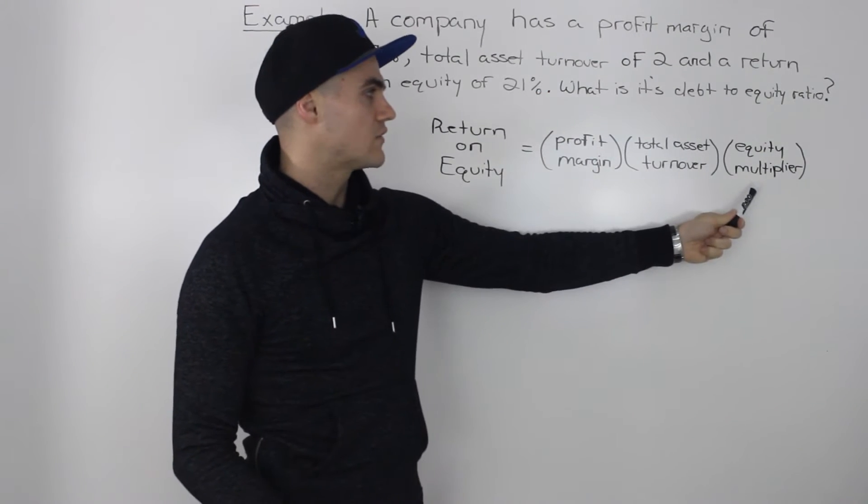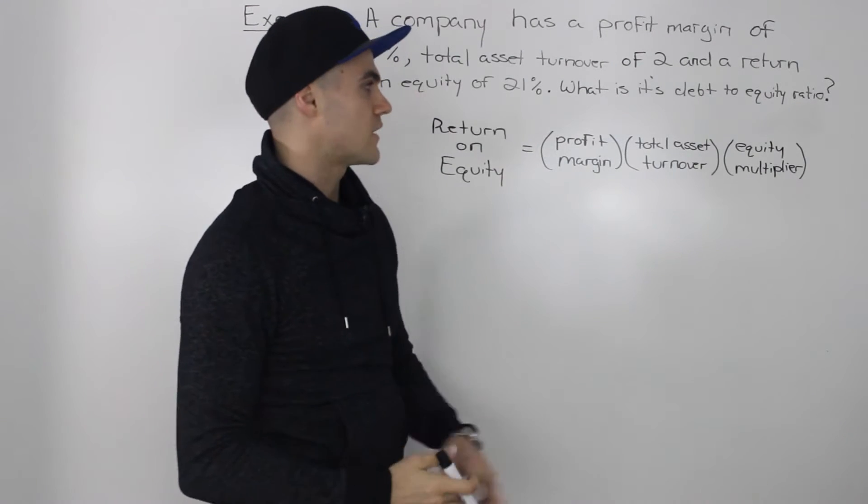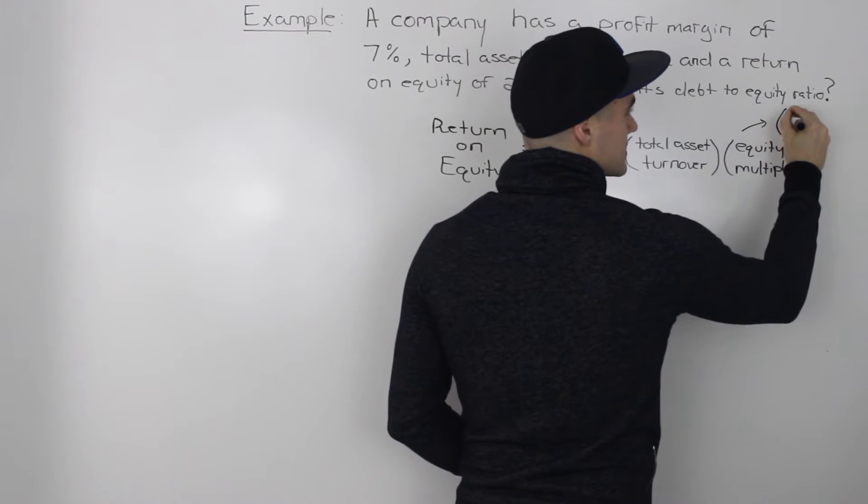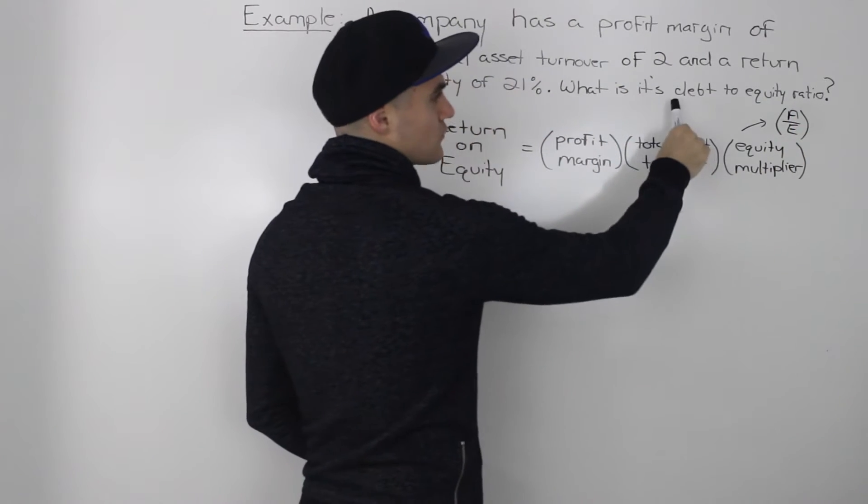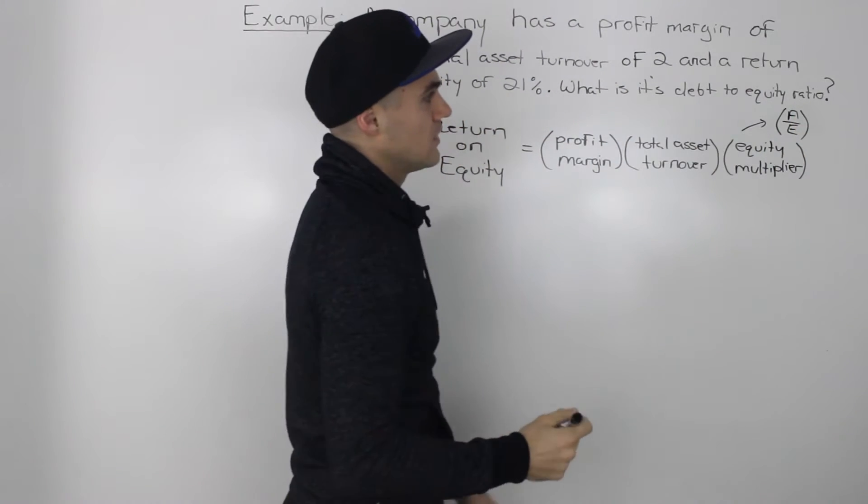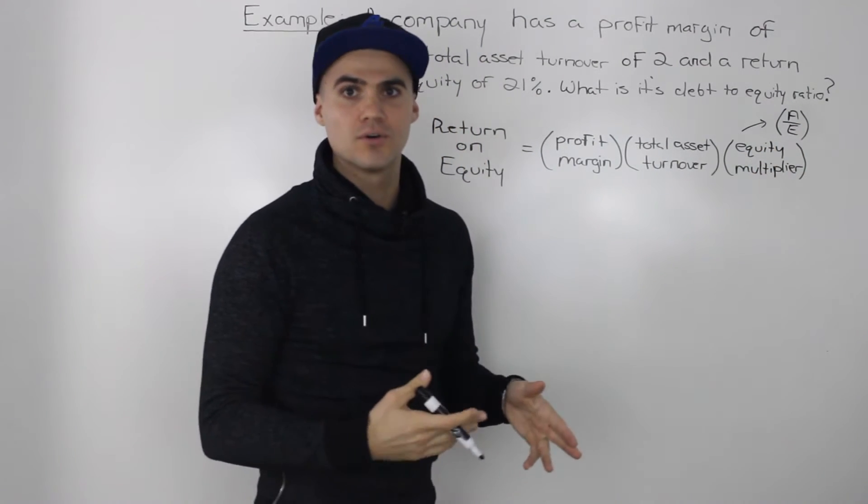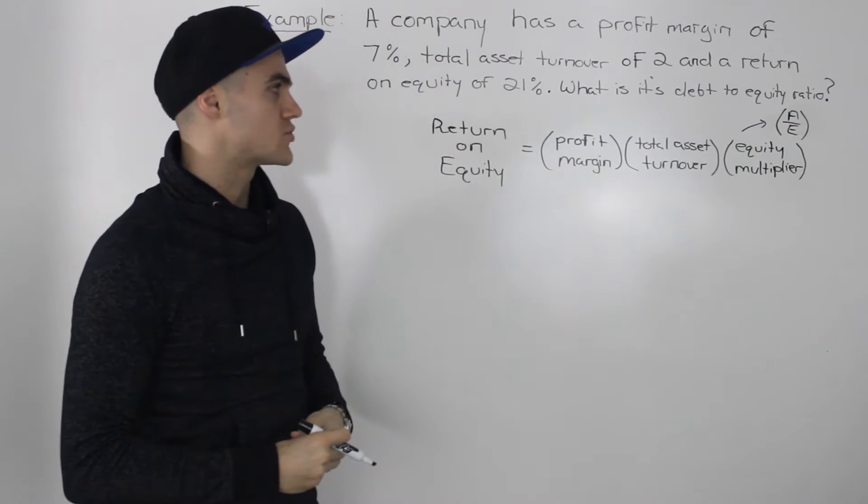However, we're not given the equity multiplier, but we can find that. And it makes sense for us to find the equity multiplier because the equity multiplier is basically equal to assets over equity. And since we're finding the debt-to-equity ratio, perhaps we can do something with the assets-to-equity ratio to find the debt-to-equity ratio.